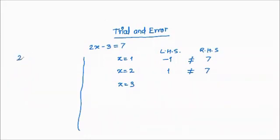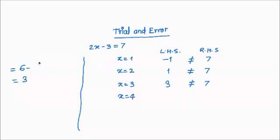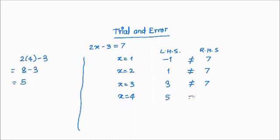We take x equals 3: 2 into 3 minus 3 equals 6 minus 3 equals 3. Not equal to 7. Then x equals 4: 2 into 4 minus 3 equals 8 minus 3 equals 5. Also not equal to 7.